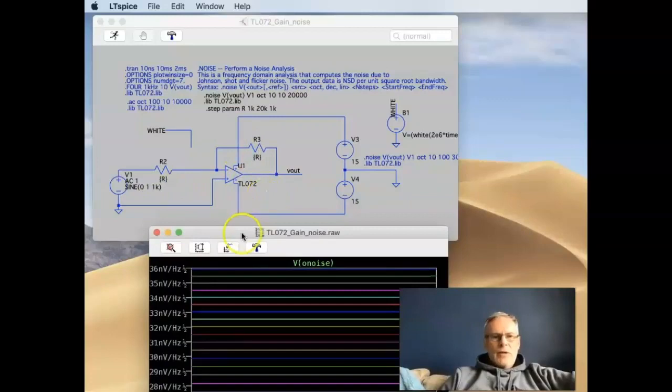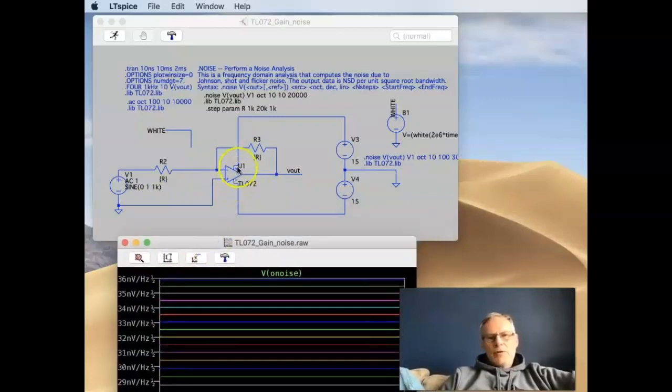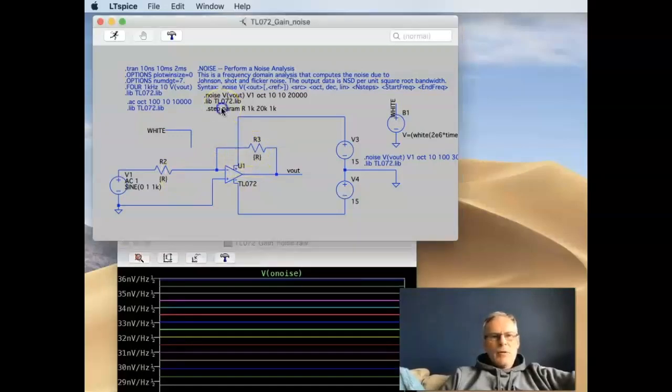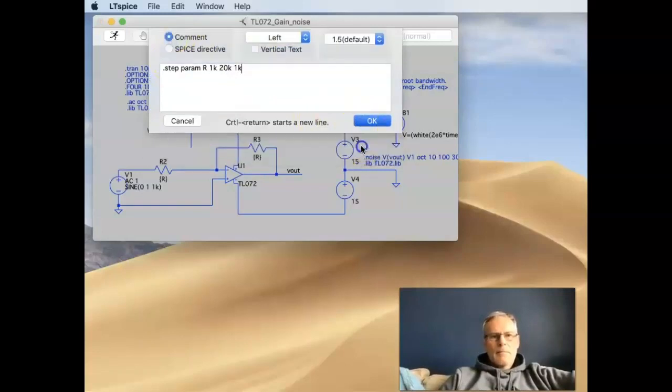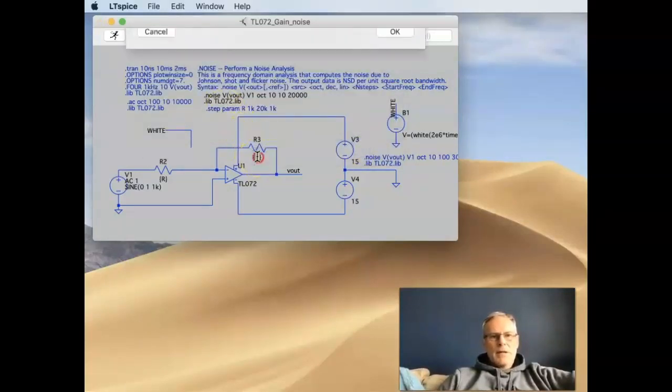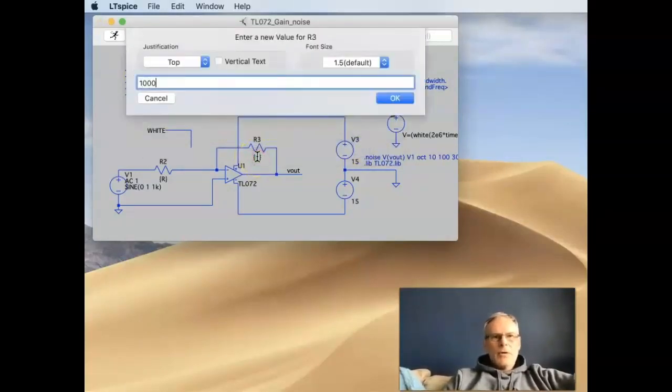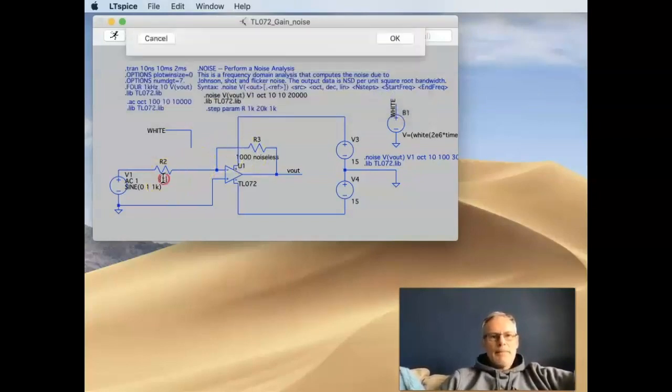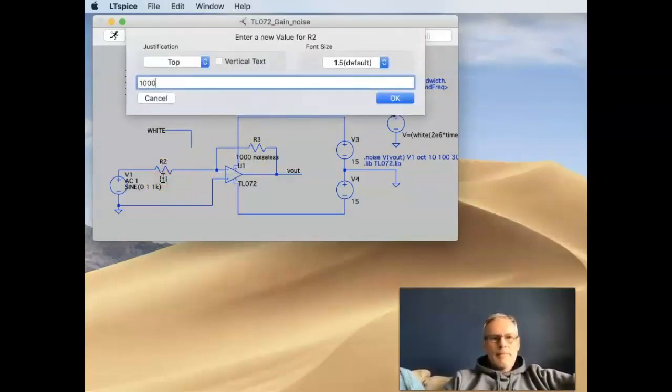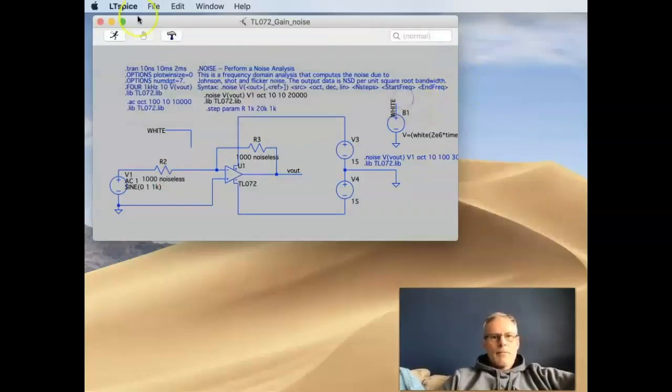Now there's a little trick within LTSpice. If we just wanted to see the effect of the op amp without the R values, then what we can do is just take the step command out. Put these back to fixed again. So we're going to do 1K. But what we can do is use this keyword noiseless. So if you put noiseless after your value, run the analysis again.